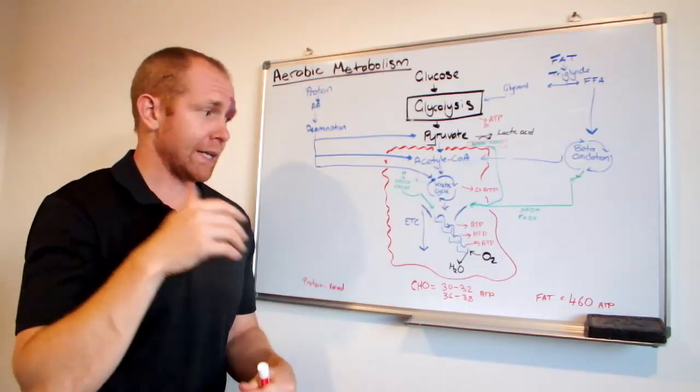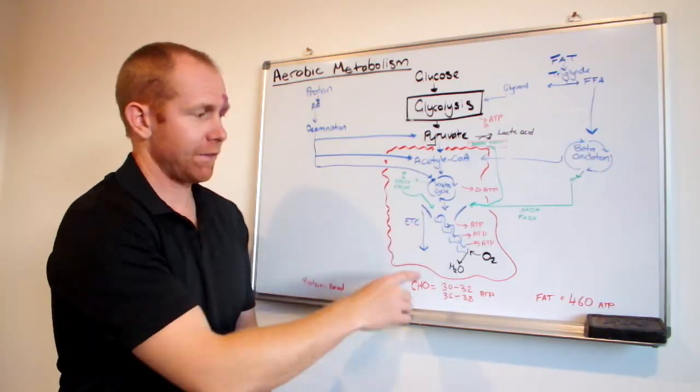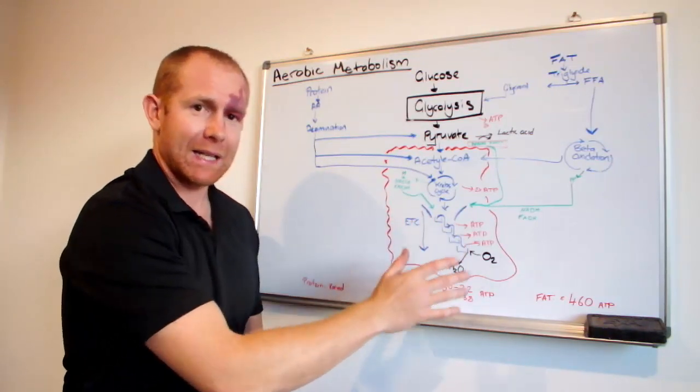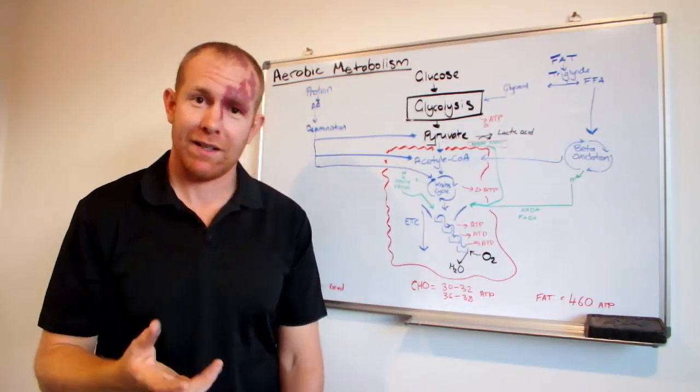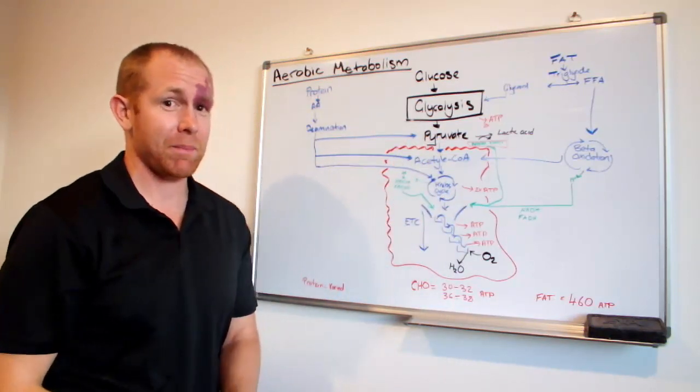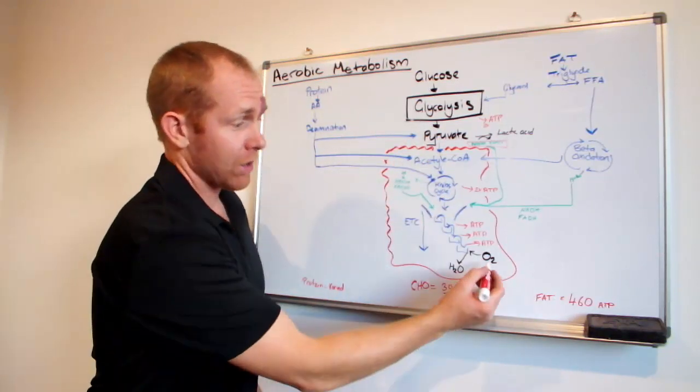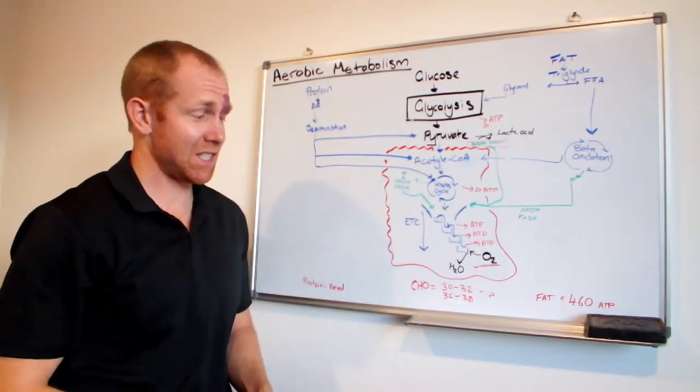In the electron transport chain, we get this effect, this waterfall effect, if you like, and a bunch of ATP is made. Aerobic metabolism uses oxygen, but we haven't talked about oxygen this whole time. And the interesting thing about aerobic metabolism, oxygen only comes in right at the end. And this is kind of cool.